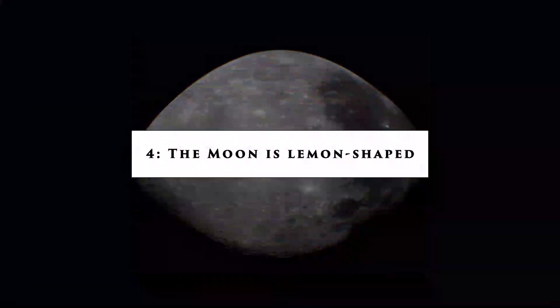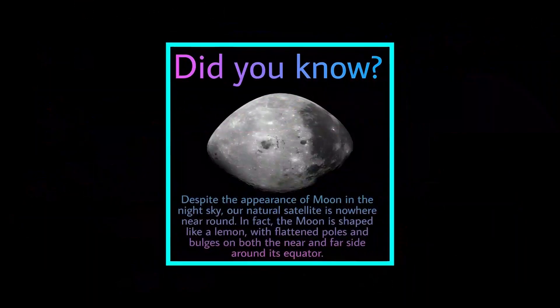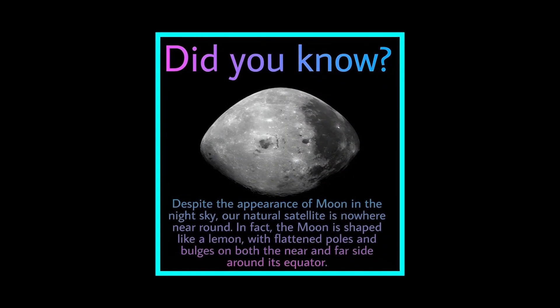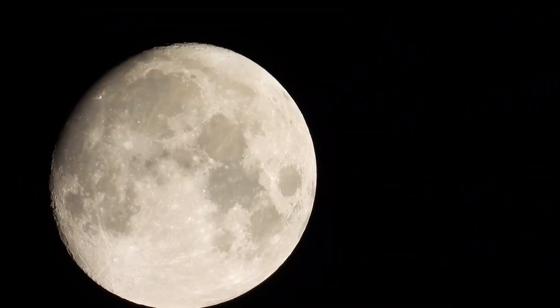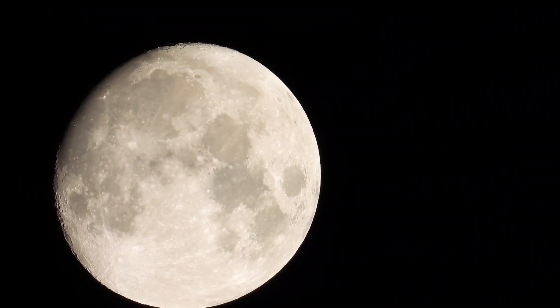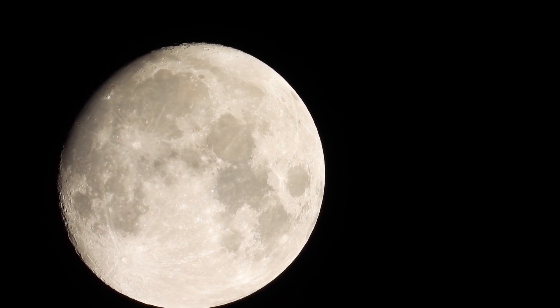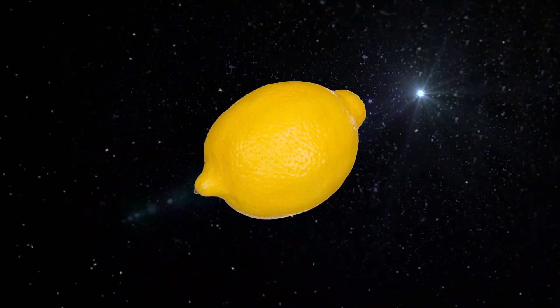Number 4: The Moon Is Lemon Shaped. You can see more than what the eye can see if you gaze up at the moon. Our lunar buddy has an unusual shape in contrast to its celestial attractiveness. Think of a lemon drifting under the stars.